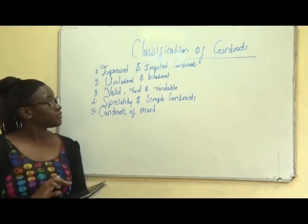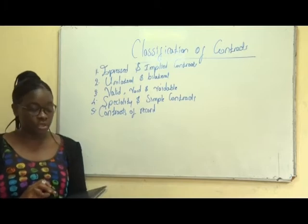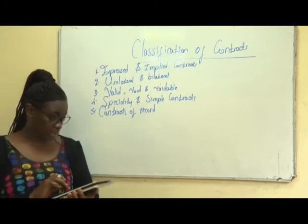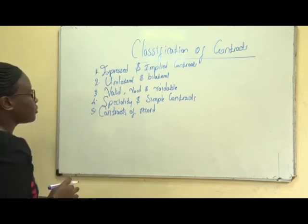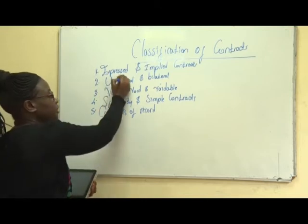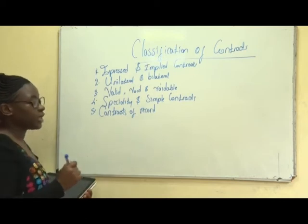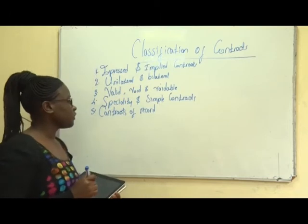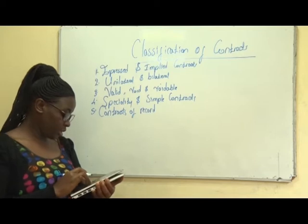Hello once again. In this video we will be looking at the classification of contracts. We have a couple of classifications under the law of contracts. First, we have expressed and implied contracts. We also have unilateral and bilateral contracts. Number three, we have valid, void and voidable contracts. We also have specialty and simple contracts, and there is also contract of record.